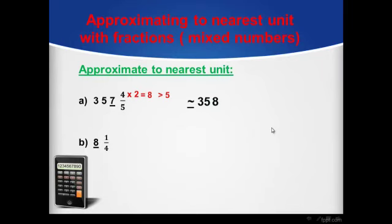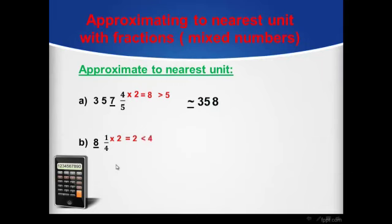Another example: 8 and 1 over 4. Here we don't have numbers before the units digit, so we look directly at our fraction. We multiply the numerator by 2, which gives 2, and compare it with the denominator, which is 4. It's less than 4, so it will do nothing with our units digit, and the result will be 8, same as it is.